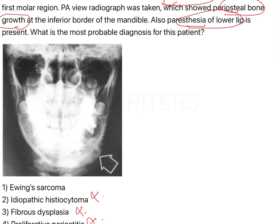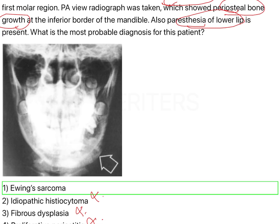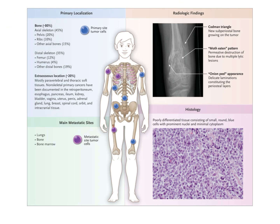That brings us to the answer: Ewing sarcoma. Ewing sarcoma is also known as a round cell tumor because on histopathology under the microscope, you will see a lot of round cells. These round cells are arranged in what is called a filigree pattern — this is an important MCQ point to remember.